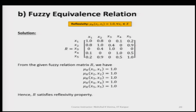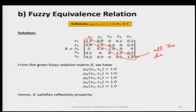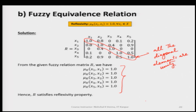The given fuzzy relation set R has all its diagonal elements as unity. All diagonal elements are 1, so mu_R(x_i, x_i) = 1. We can see mu_R(x_1,x_1), mu_R(x_2,x_2), mu_R(x_3,x_3), mu_R(x_4,x_4), mu_R(x_5,x_5) are all 1. So R is satisfying the reflexivity property; the first property is satisfied.